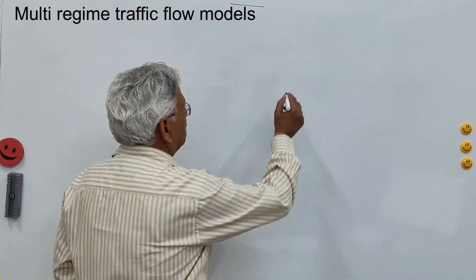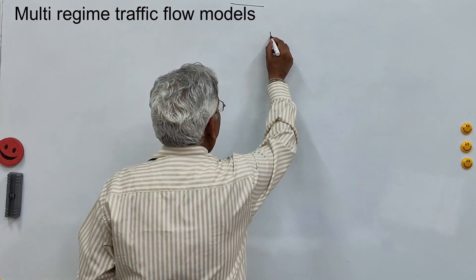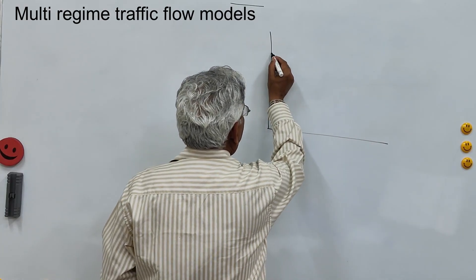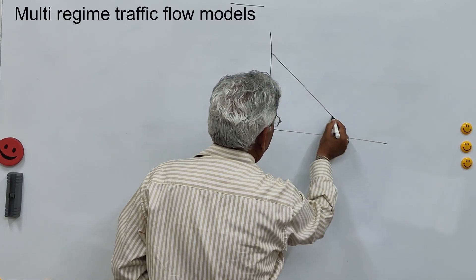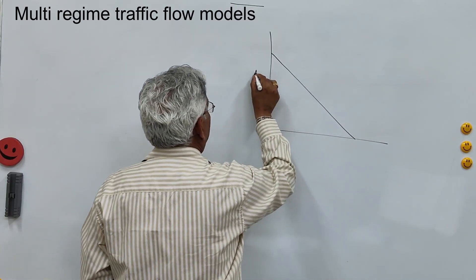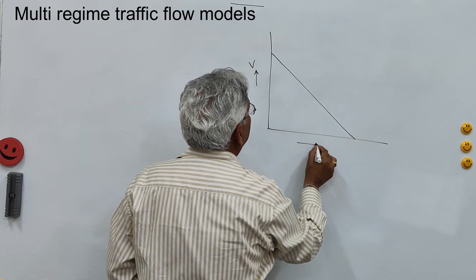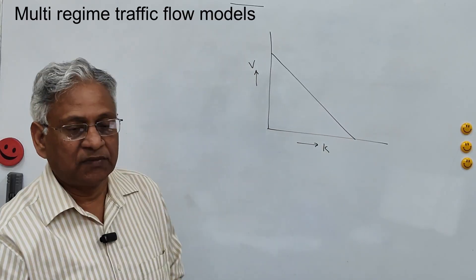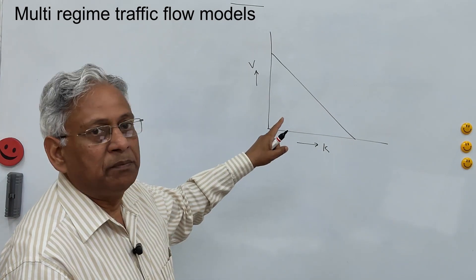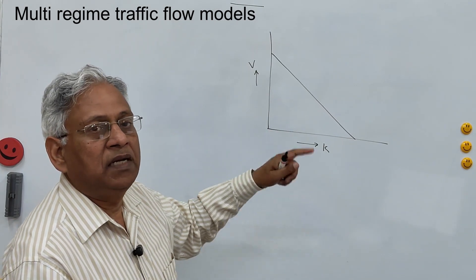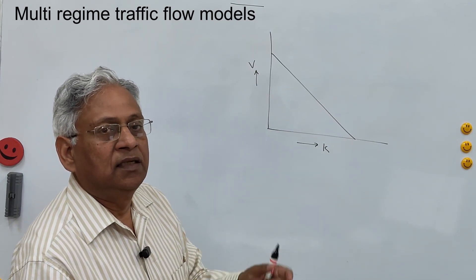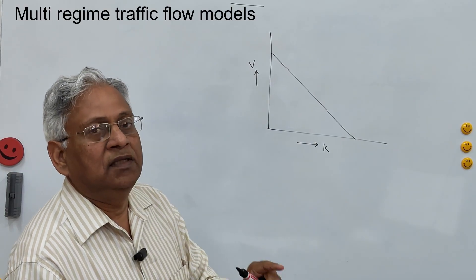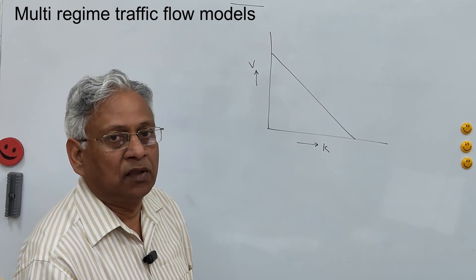The Greenshield model assumes a linear relationship between speed and density in the entire range of traffic flow — this is the speed and that is the density. This is the Greenshield model. It is a simple model, but many researchers have shown that the linear relationship does not cover the entire traffic flow conditions on the road.